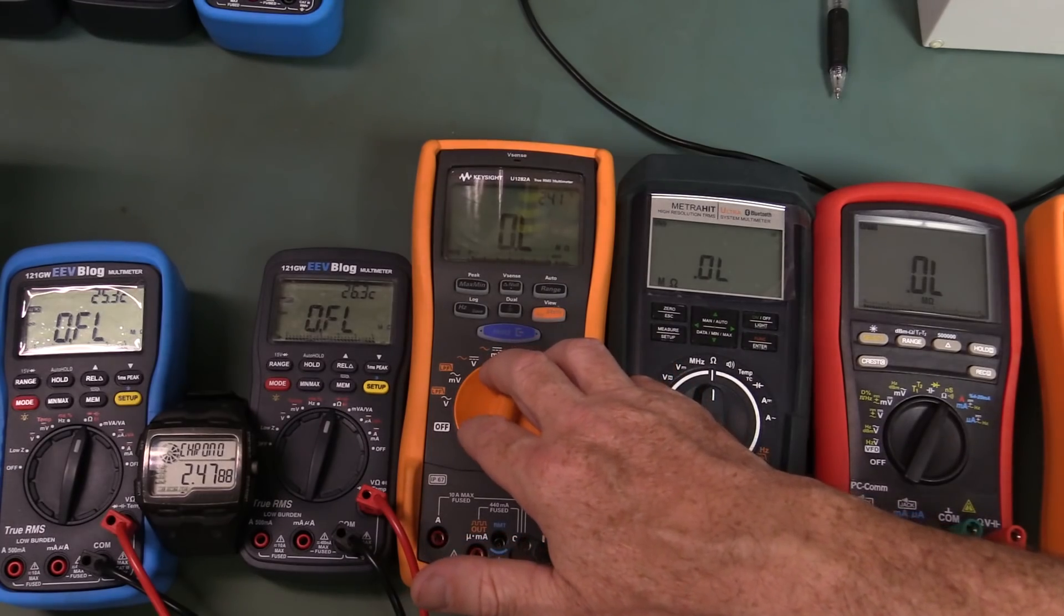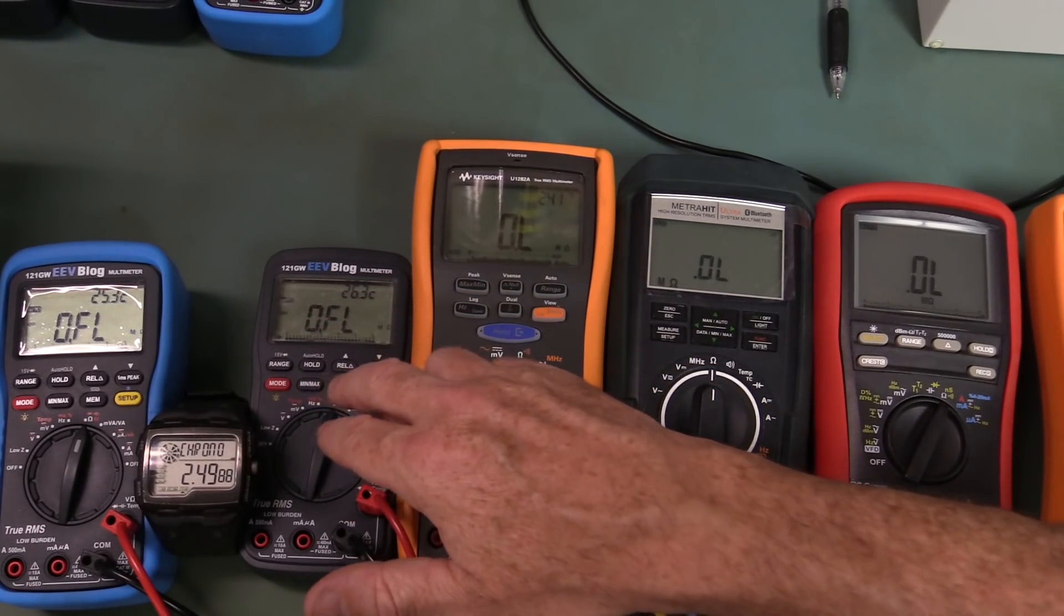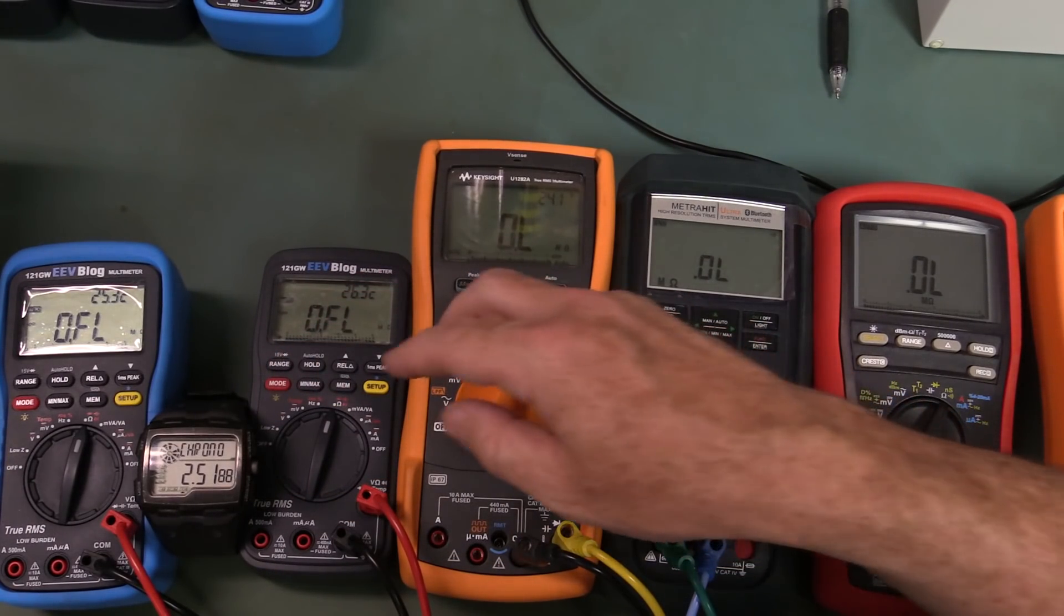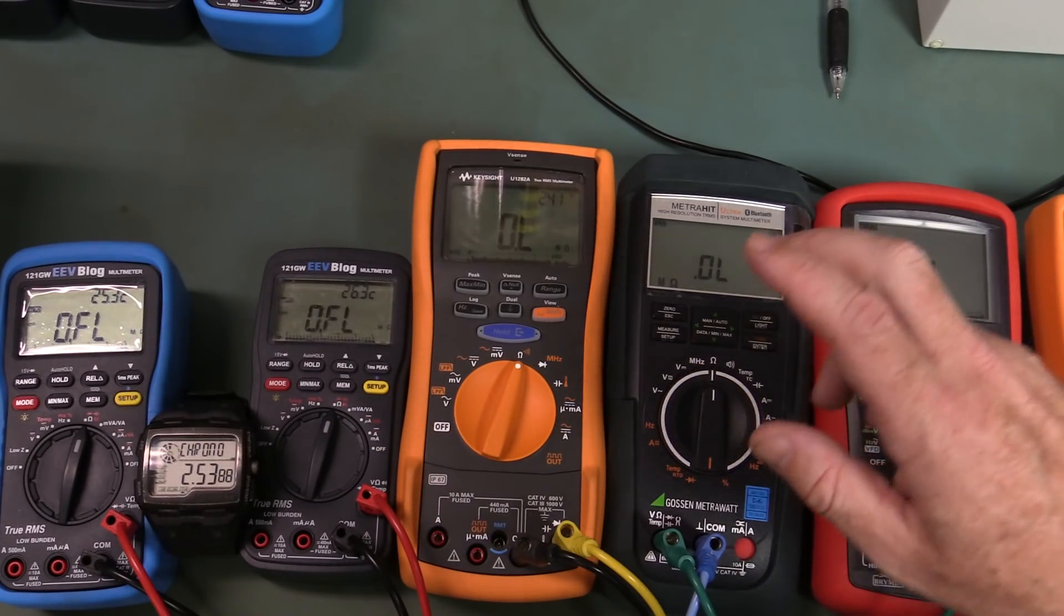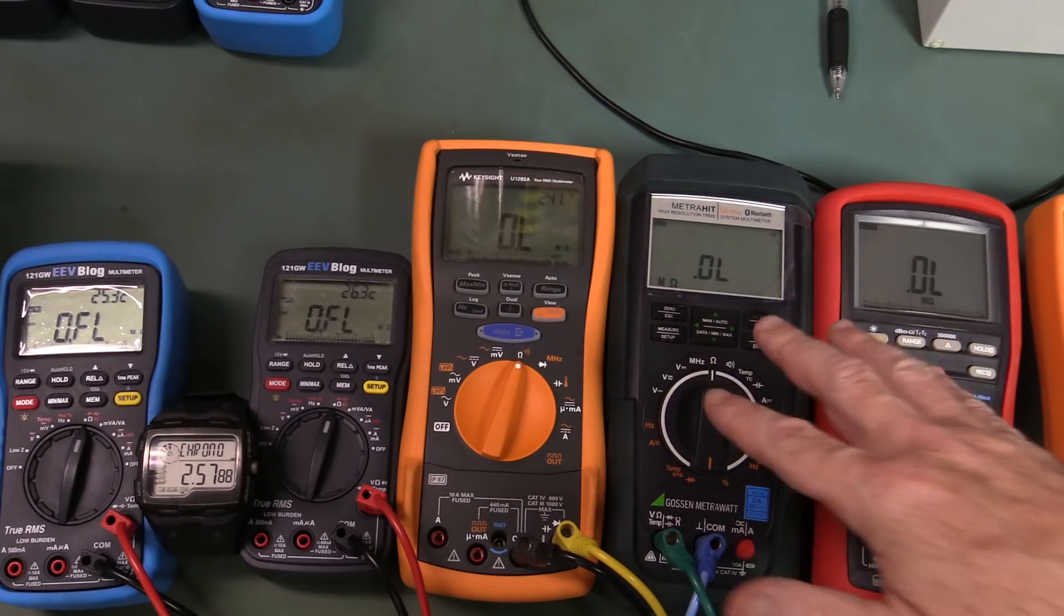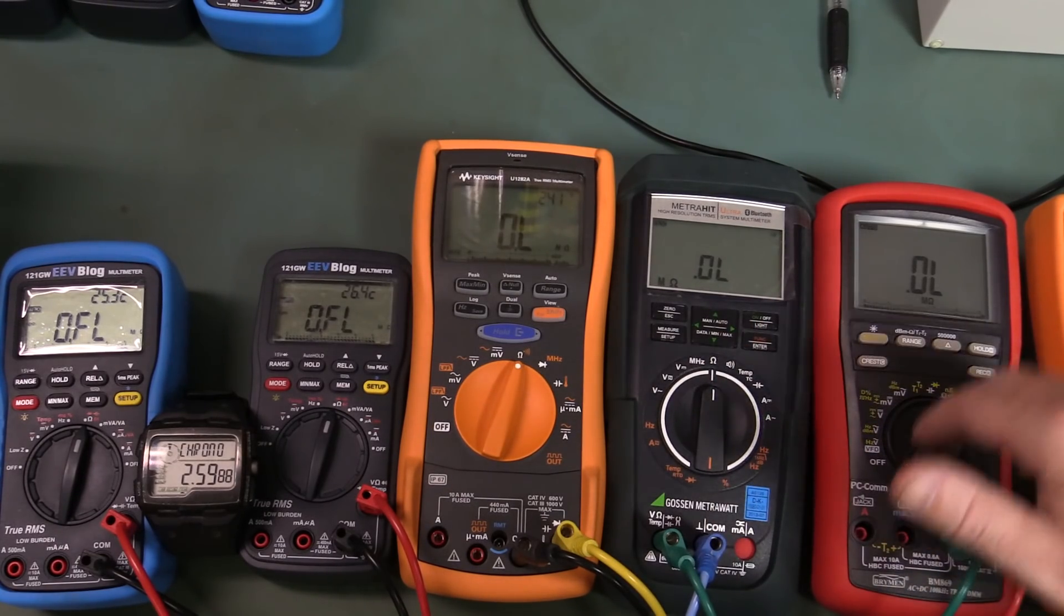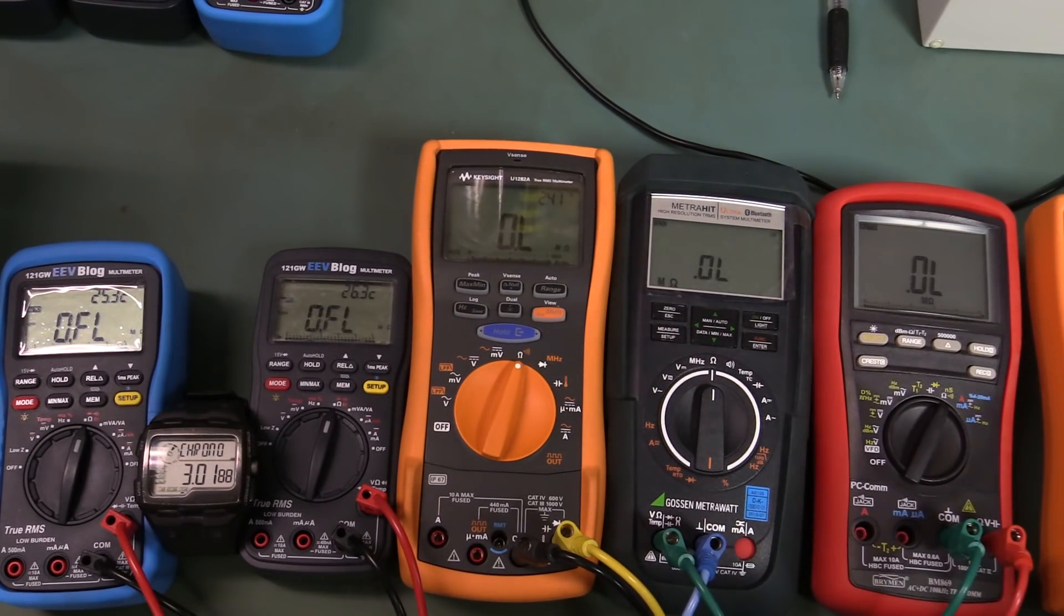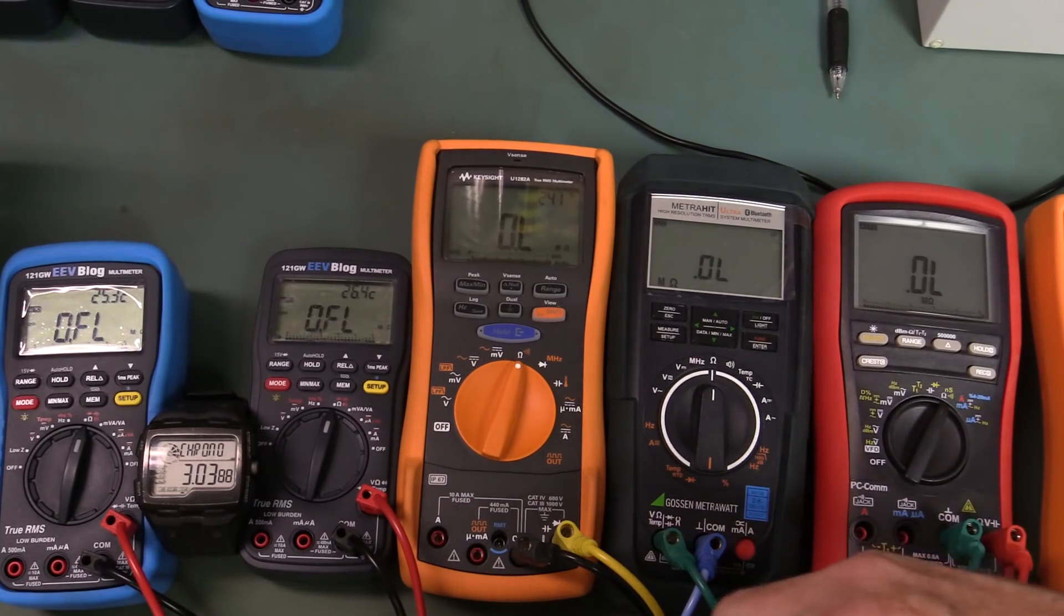Comparing it with the U1282A, which uses the exact same chipset, the HY3131 as the 121GW, the Metro Hit Ultra, and a fast auto-ranging real high-end precision meter in the Bryman BM869.